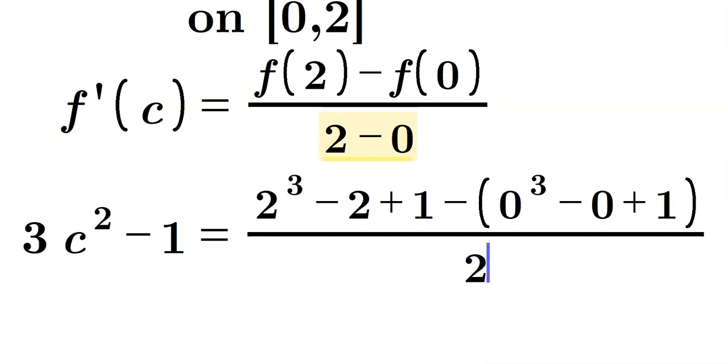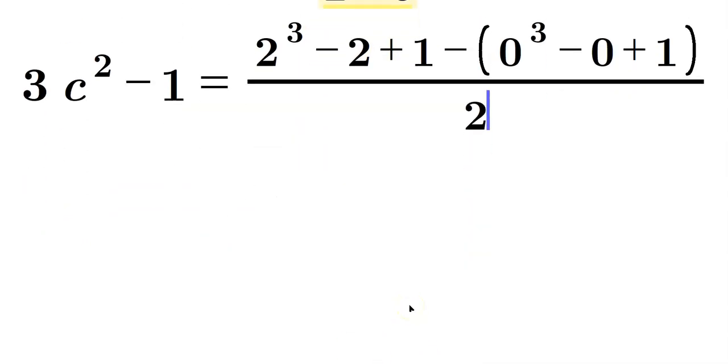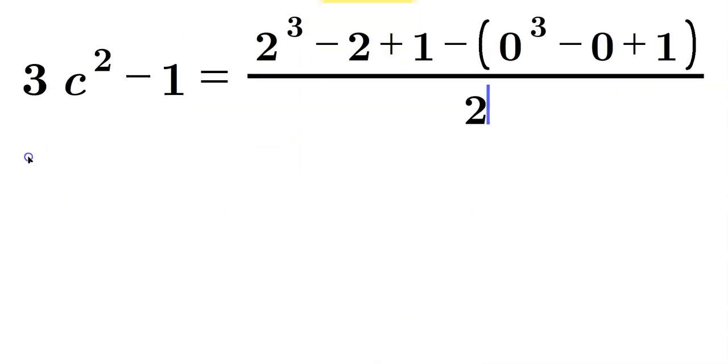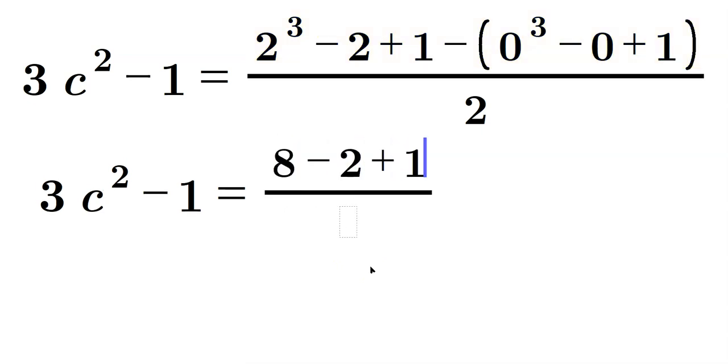2 minus 0, which is just 2. So that's the mean value theorem statement. Then from here, just solve this for c. So it's 3c squared minus 1 is equal to, we'll work through the expression in the numerator. So it's going to be 8 minus 2 plus 1 at first minus,